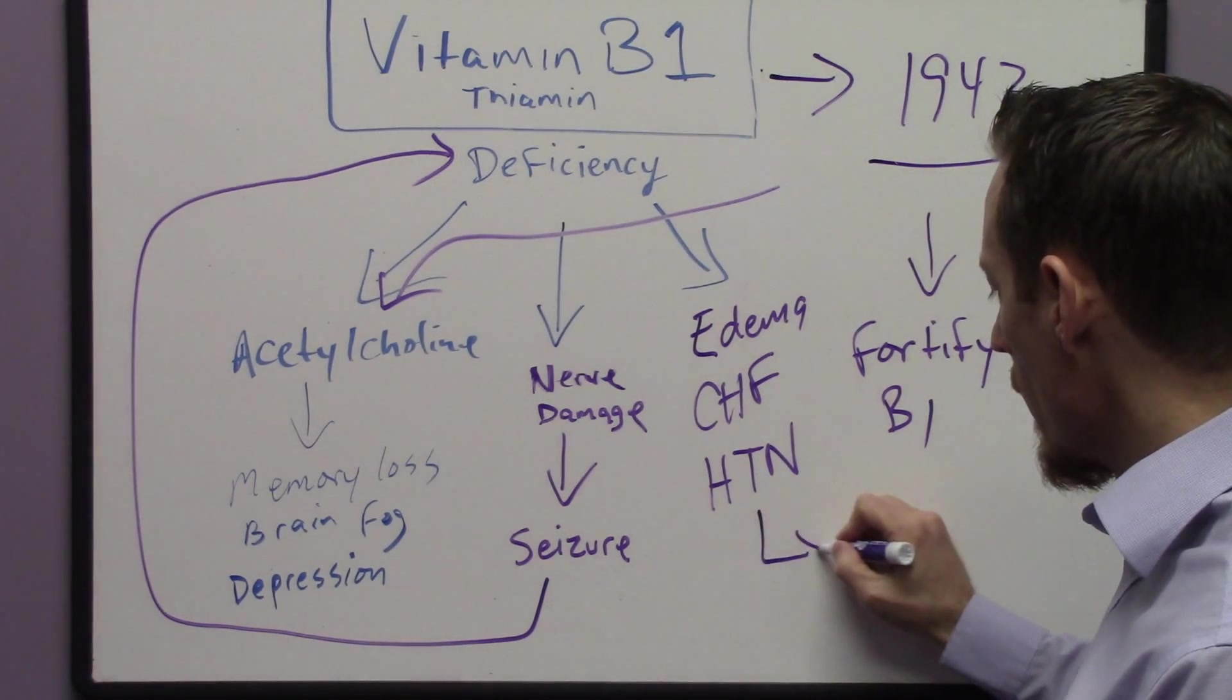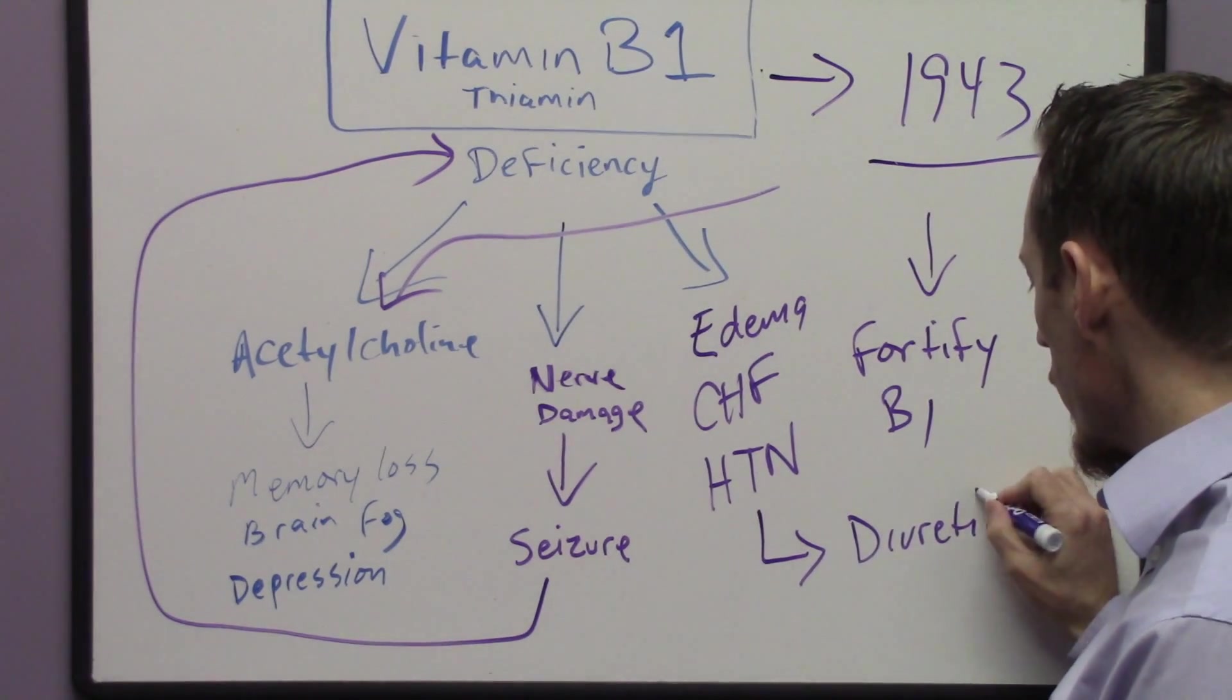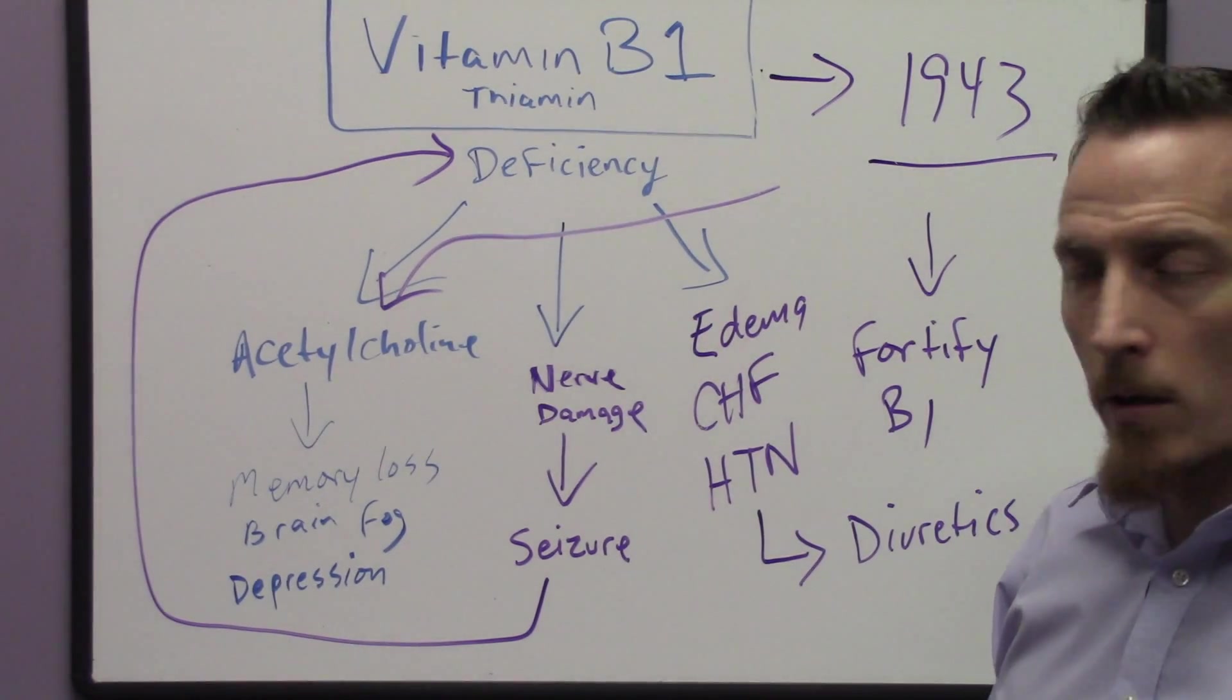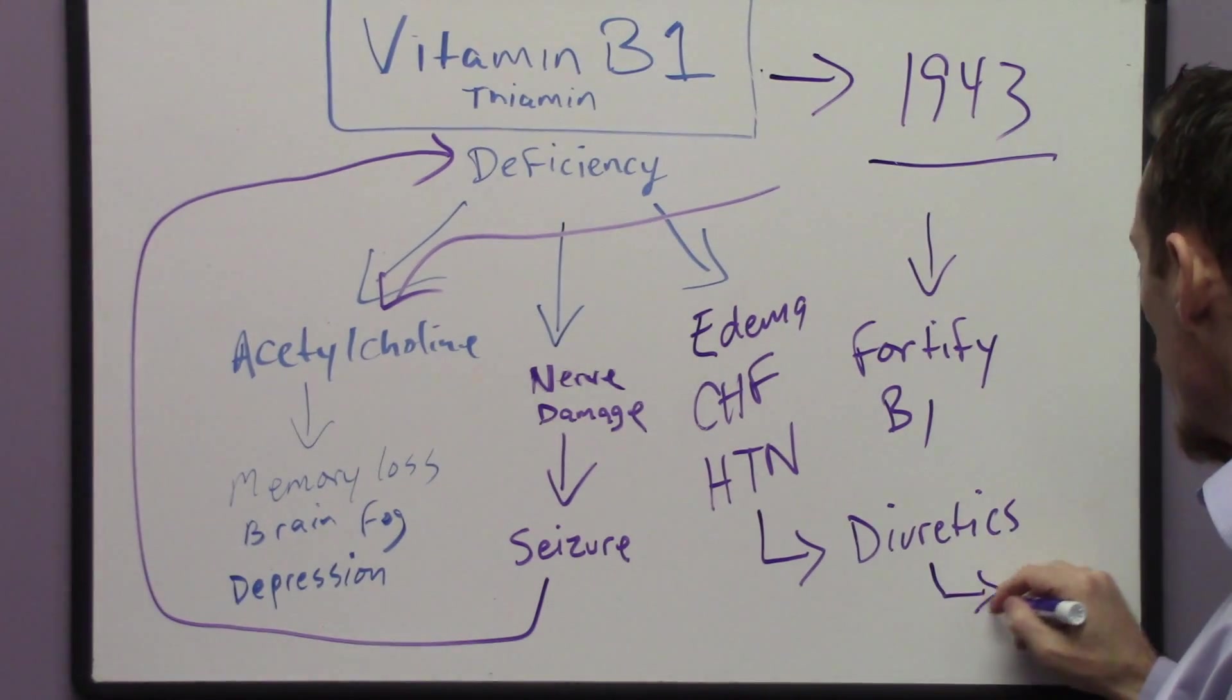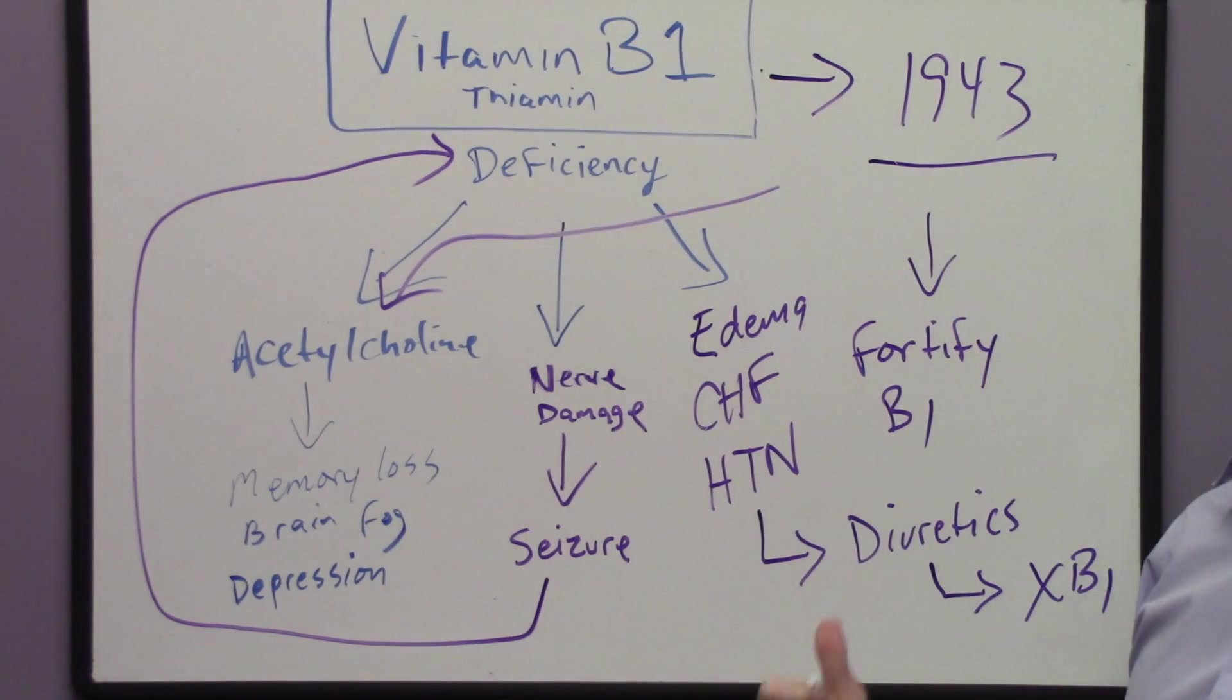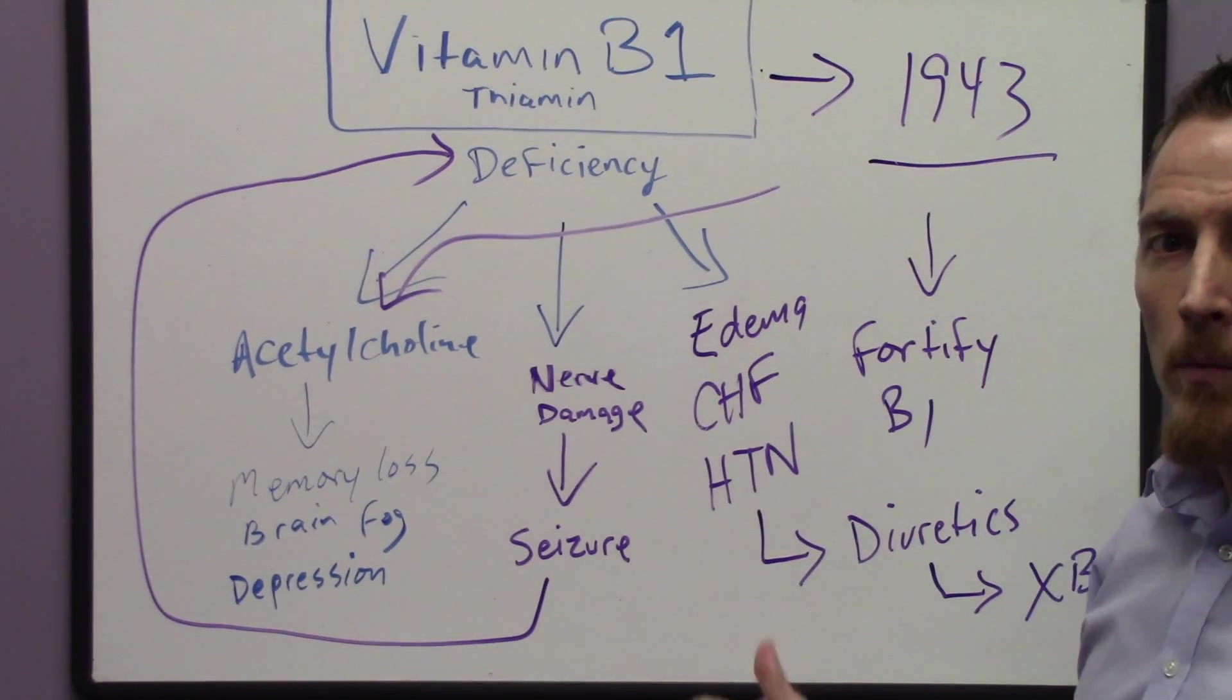And the problem that I want to bring up, if you're taking or using a diuretic medication, diuretics are designed to treat congestive heart failure, edema, and high blood pressure. Basically what they do is they push excessive fluid out of your bloodstream. The problem with diuretics is they actually block vitamin B1's ability to get into heart cells.